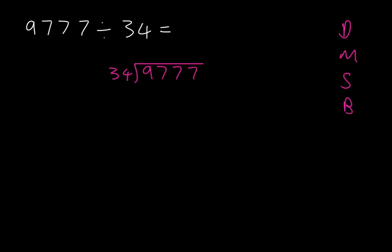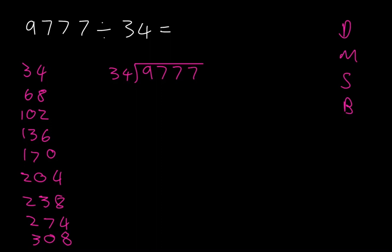If you were asked what is 9777 divided by 34 and you were going to go about it by long division, this is how you do that. The first step you should do is to write down multiples of your divisor. So we have 34, 68, 102, 136, 170, 204, 238, 274, and 308. You'll find that these become really useful.